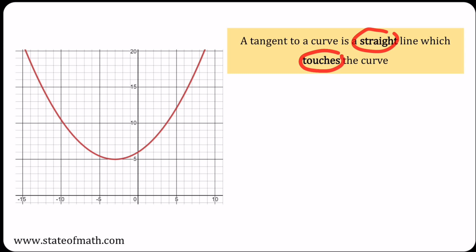Suppose we are interested in the point with coordinates negative 9, 9, and we would like to find the gradient of the tangent. So it's the straight line that just touches upon this point, something like this.